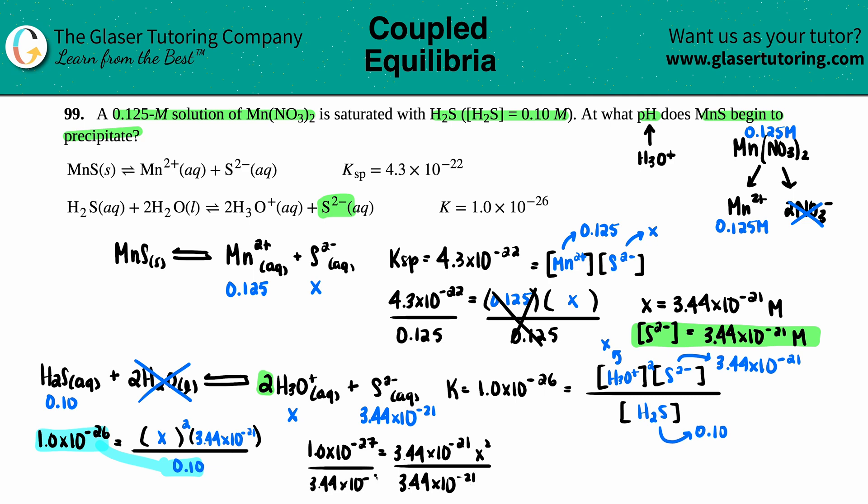3.44 times 10 to the negative 21st. This cancels out. We are left with X squared. So we're almost there.